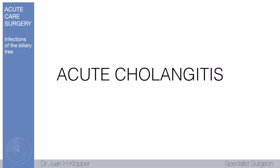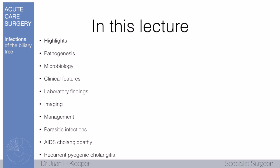In this lecture I want to discuss acute cholangitis. I'll mention a few highlights: the pathogenesis — how acute cholangitis develops — the organisms involved under microbiology, the clinical picture, special investigations both laboratory and imaging, the management of this very dangerous condition, and specific types of cholangitis including parasitic infections, AIDS cholangiopathy, and recurrent pyogenic cholangitis.